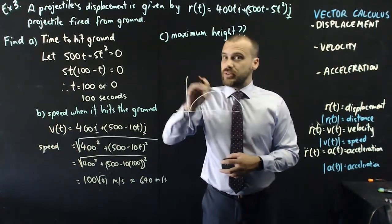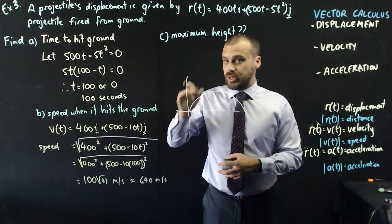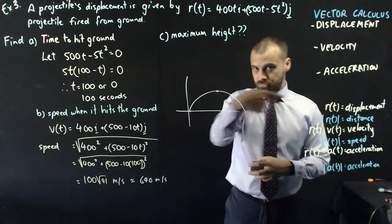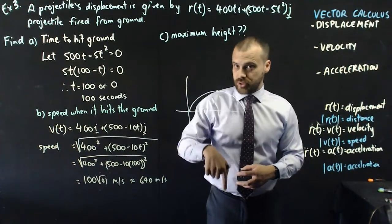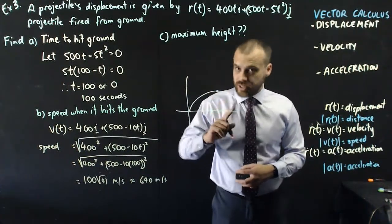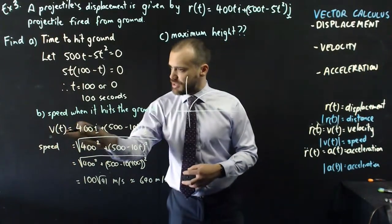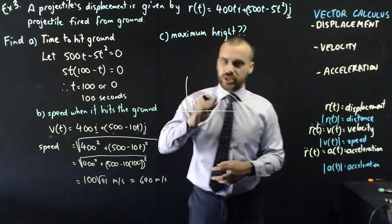In other words, its velocity in the j component is equal to zero. It's not going up. It's not going down. It's still going across. It's still going across that way, but it's not going up, and it's not going down. Velocity in the j component is equal to zero.